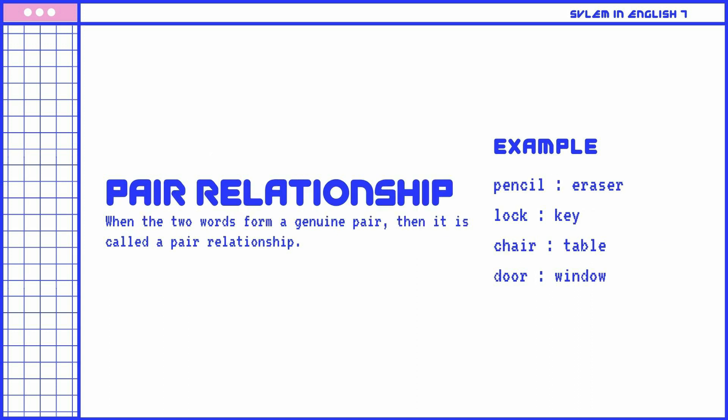Pair relationship: When the two words form a genuine pair, then it is called a pair relationship. Examples: Pencil is to eraser. Lock is to key. Chair is to table. Door is to window.